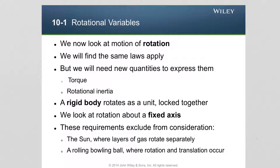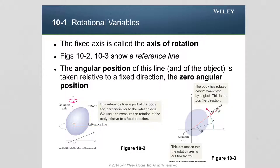The axis does not change orientation and does not change position. The fixed axis about which the object will rotate is called the axis of rotation. The first quantity we are going to define is the angular position of a reference line, which in the cartoon here is given by the red line.